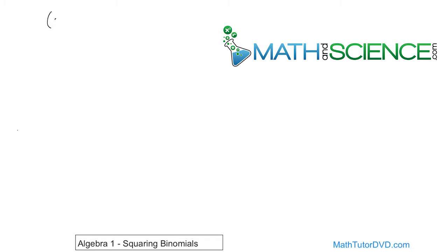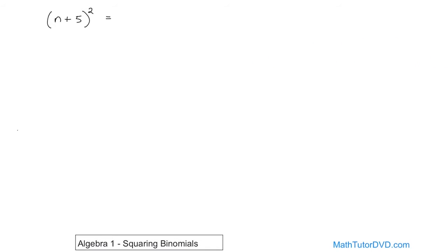For instance, if you had the problem n plus 5 and you were going to square that, this means that the quantity n plus 5 is squared. The way you should think about doing it is to say that it's n plus 5 times n plus 5. It's basically multiplied by itself two times.